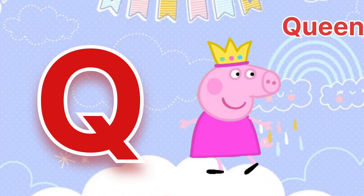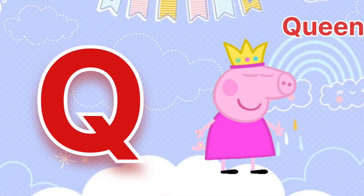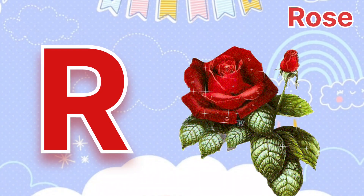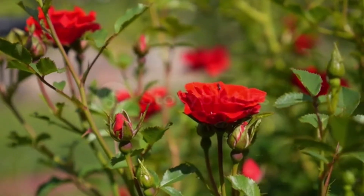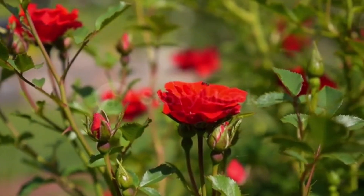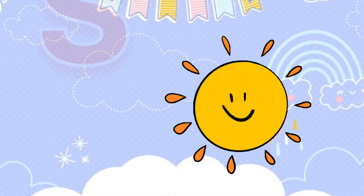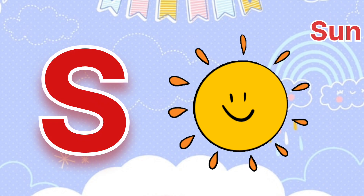Q is for Queen. Q is for Queen. R is for Rose. S is for Sun. S is for Sun.